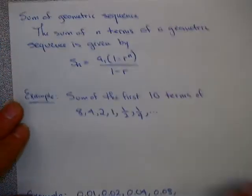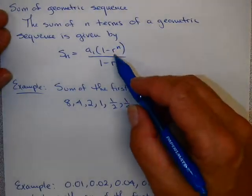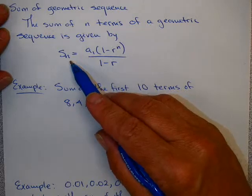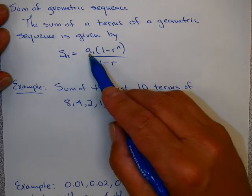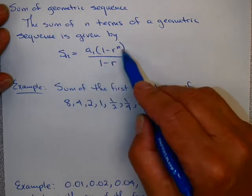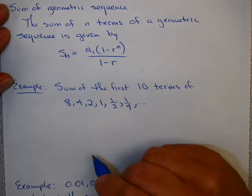Now we'd like to go on to think about this in terms of a geometric sequence. The sum of n terms of a geometric sequence is given by this formula: S_n equals a_1 times the quantity (1 minus r to the n) over (1 minus r).